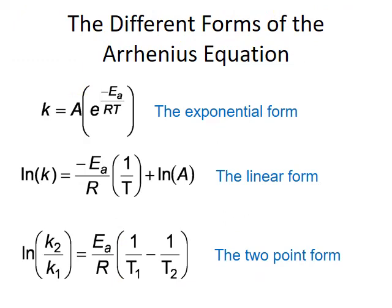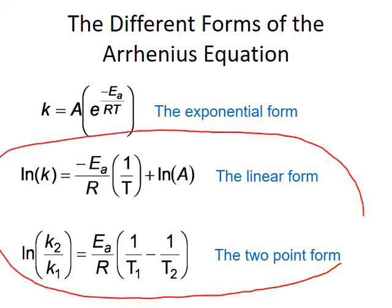To summarize, there are three common forms of the Arrhenius equation: the exponential form, the linear form, and the two-point form. The two forms we commonly use for calculations are the linear form and the two-point form. We use the linear form when we have more than two sets of temperature and rate constants; from the graph we can solve for both activation energy and frequency factor. We use the two-point form when we only have two sets of data, and we can use it to solve for activation energy, temperature, or rate constant — but not the frequency factor.